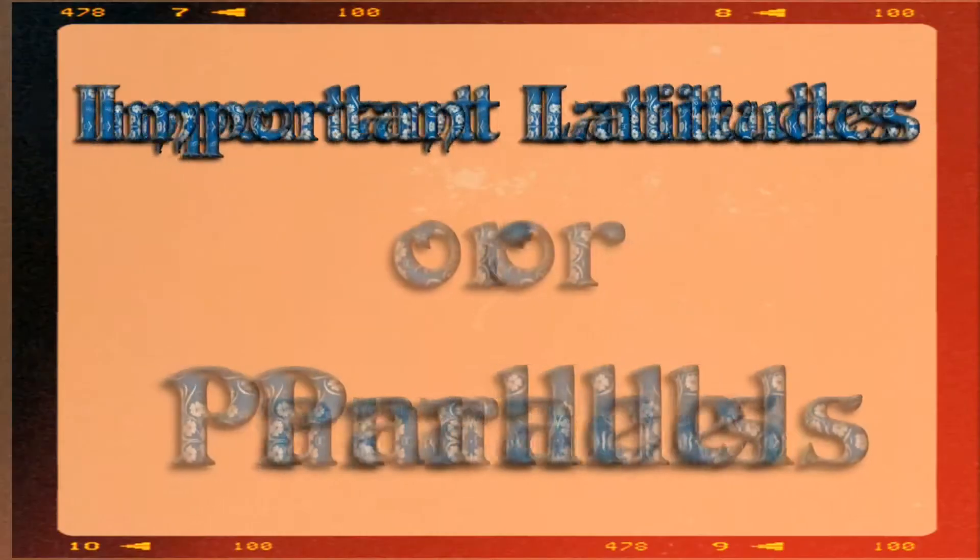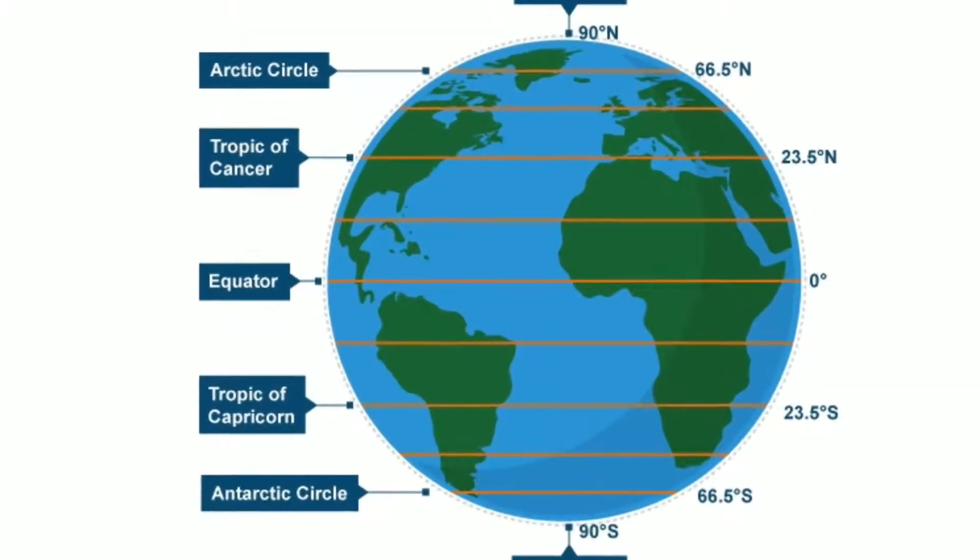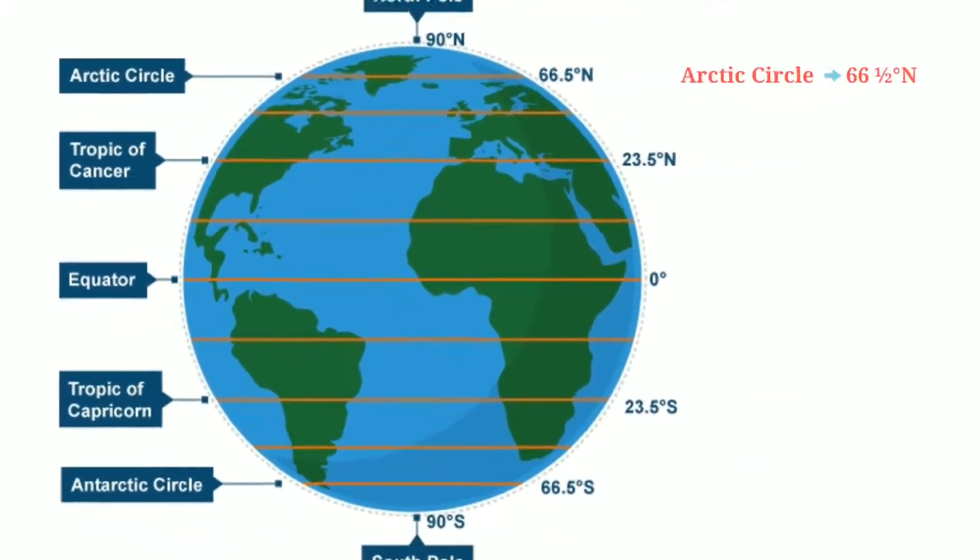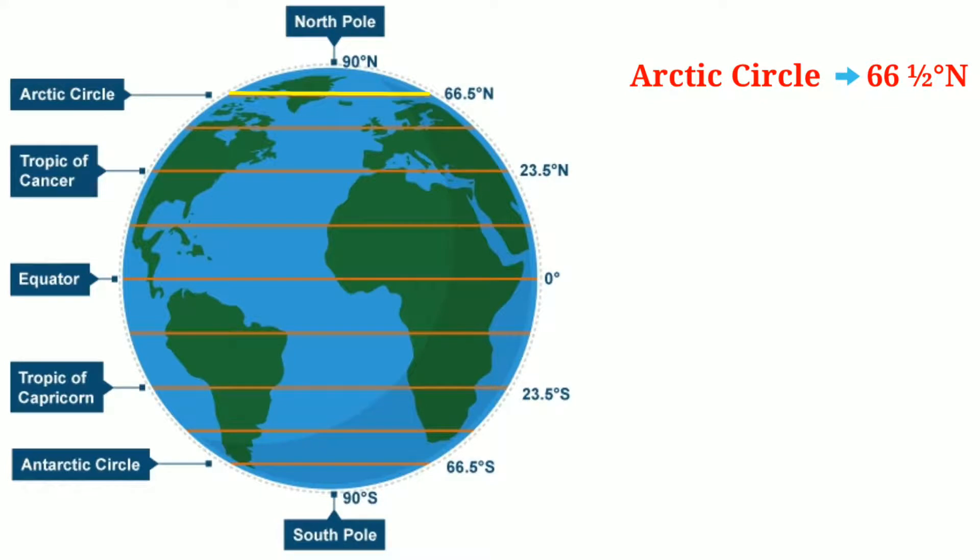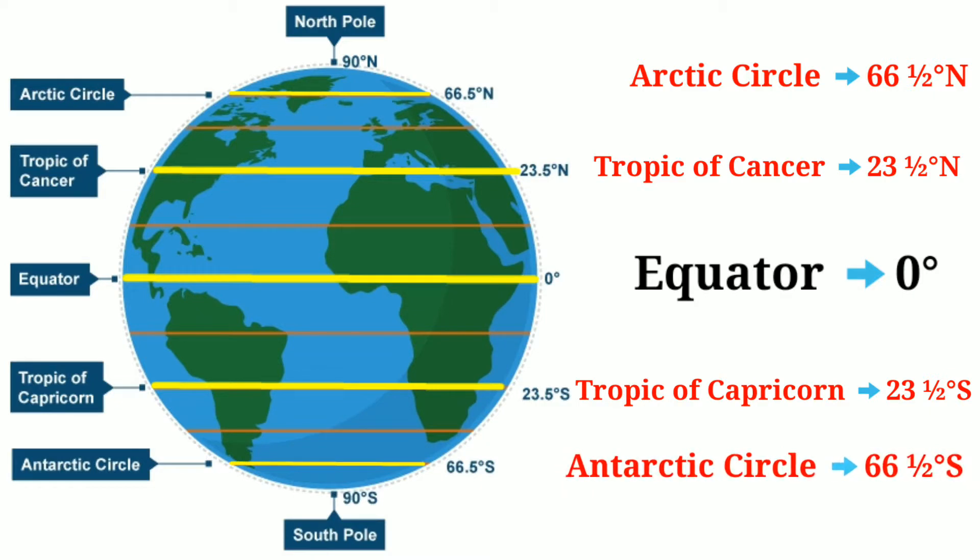Now, important latitudes or parallels. There are 5 important parallels: Arctic Circle at 66.5 degrees north, Tropic of Cancer at 23.5 degrees north, Equator is at 0 degrees, Tropic of Capricorn at 23.5 degrees south, Antarctic Circle at 66.5 degrees south.